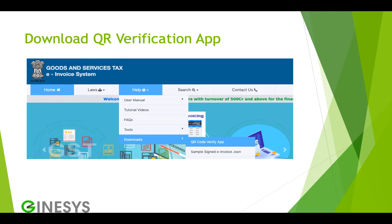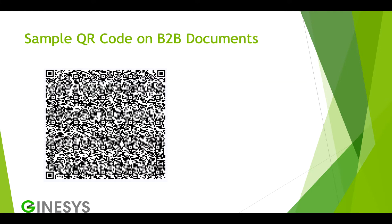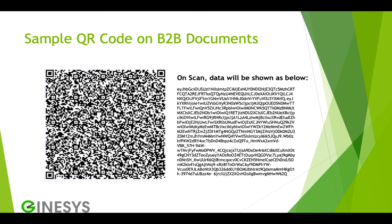The app can be downloaded from the e-invoice system or e-invoice portal — as shown on your screen, you can click on Help, then Download, and then QR Code Verify App. This is one sample QR code which needs to be printed. If you scan this QR code in any QR code scanner app, you will find the data in an encoded format. This encoded version of the invoice details can only be interpreted by the verification app which will be released by the government.